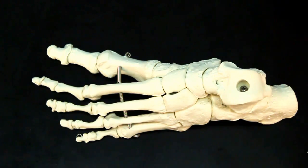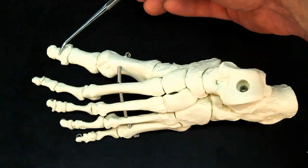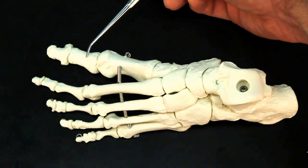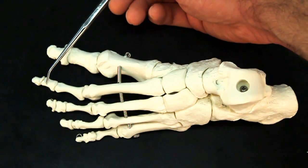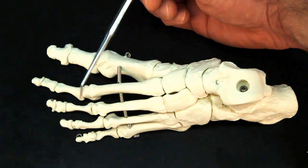And then we have 14 phalanges, just like the hand. A proximal and distal phalange for the big toe, then proximal, middle, distal phalanges for toes two through five.